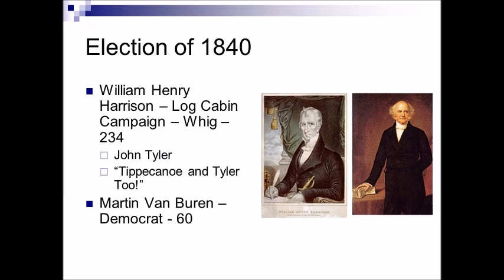1840 is going to be a repeat of the 1836 election — William Henry Harrison against Martin Van Buren again. Martin Van Buren is the incumbent, the hand-chosen successor to Andrew Jackson. But if you ever want to get into politics, you don't want to follow somebody popular. He follows Jackson and people are not pleased. He was also left in a bad place where Jackson's poor economic decisions like the pet banks had left a nation ready to collapse, and the collapse happens under Van Buren.